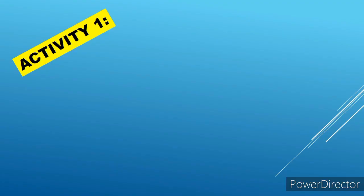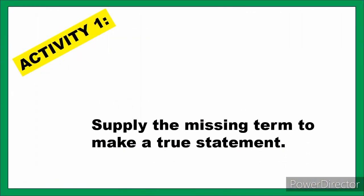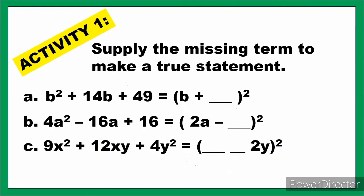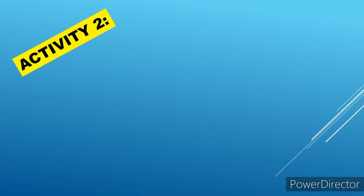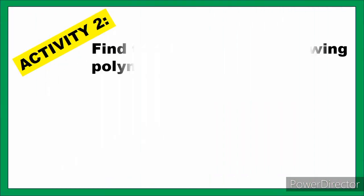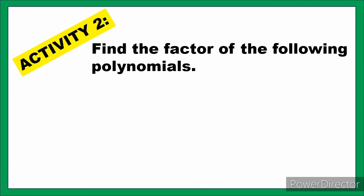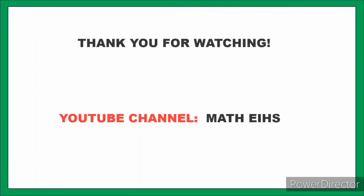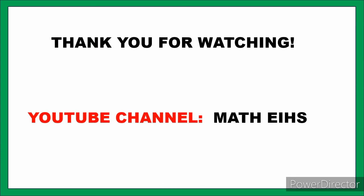I think you're ready for the activity. Activity number 1 asks you to supply the missing term to make a true statement, given the following trinomials. Activity number 2 asks you to find the factors of the following polynomials by applying the factoring of perfect square trinomials. That's all for now — thank you for watching. This is my YouTube channel, Matish. Thank you.